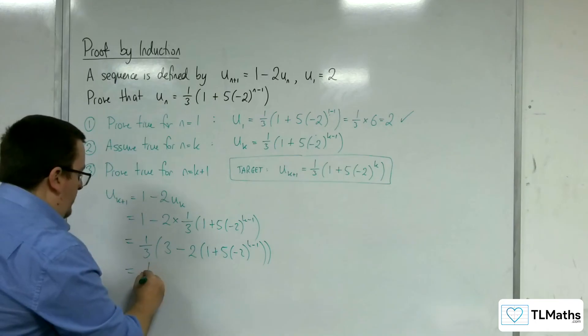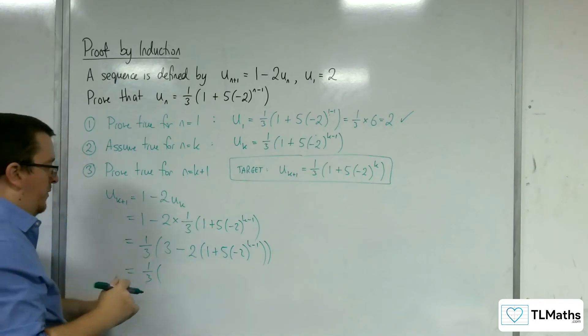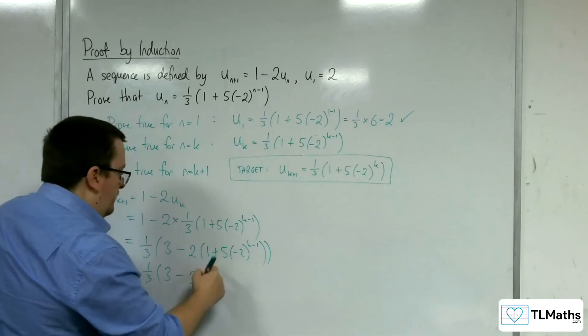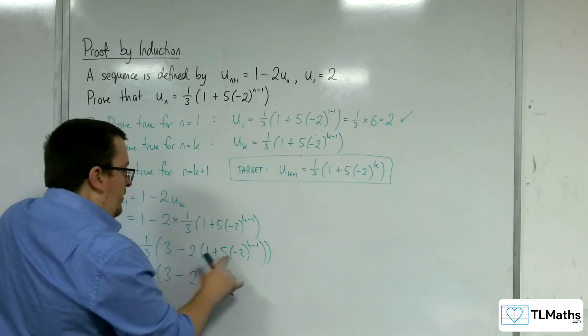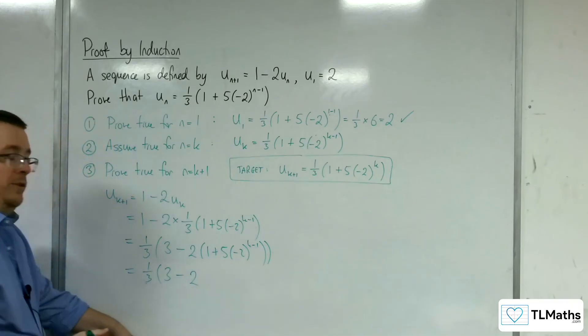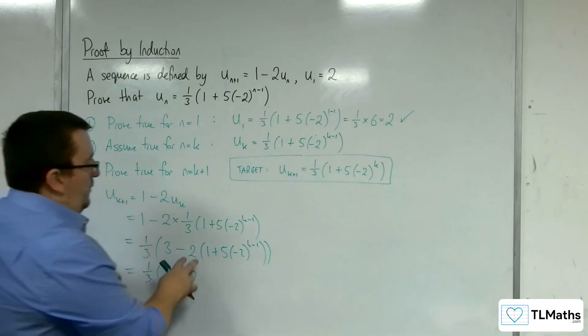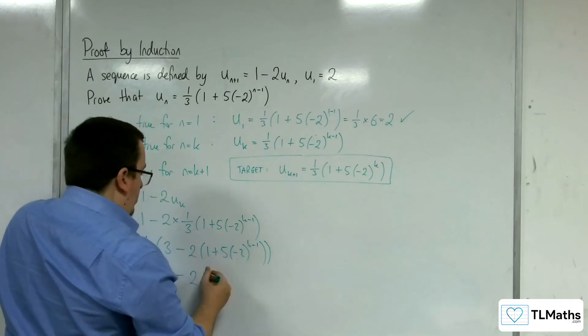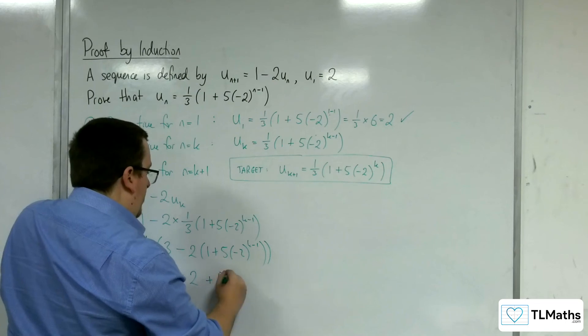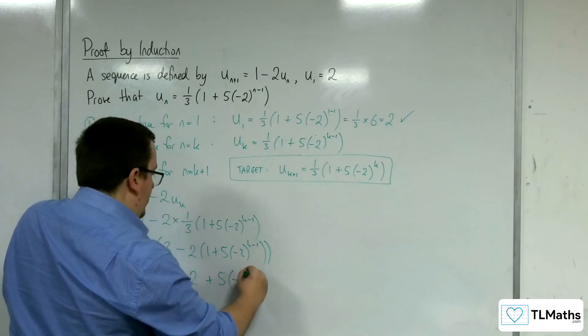So we've got the one third. Right, let's multiply through now. So we've got 3, take away 2, and then minus 2 is going to multiply with 5 lots of minus 2 to the k minus 1. So that's minus 2 to the 1,